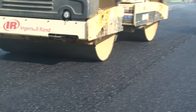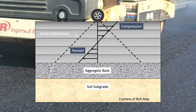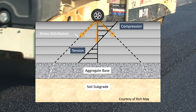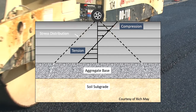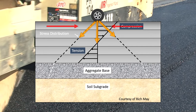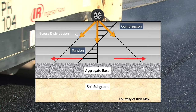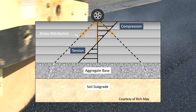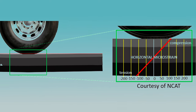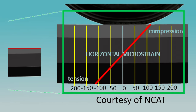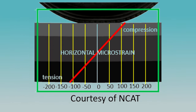In a well-bonded pavement with all layers acting as a monolithic layer, stress applied by a load will be distributed throughout the entire pavement. The top layer will experience compression as the structure deflects ever so slightly, and the lower layers will experience tension as they are stretched by this deflection. Looking at a strain profile, a well-bonded roadway will have peak microstrains both in compression and tension of a little more than 100 microstrains. If properly designed, a monolithic pavement structure can handle the applied loads and resulting strains.